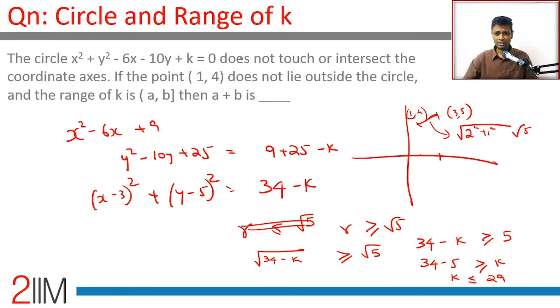Now this circle does not touch or intersect the coordinate axes. This is center. From here this distance is 5, this distance is 5, this distance is 3. The y-axis cannot even be a tangent, so our radius is less than or equal to 3. It is less than 3.